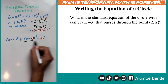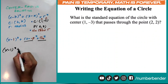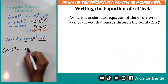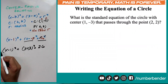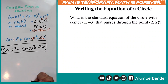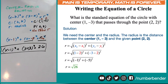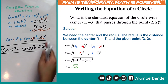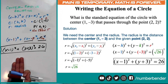We can simplify further: x minus 1 quantity squared, and y minus negative 3 becomes y plus 3. The square root of 26 squared cancels to just 26. So the standard equation is x minus 1 squared plus y plus 3 squared equals 26. Using the distance formula gave us the radius, and replacing h, k, and r in the formula and simplifying gives us the same answer shown on the screen.